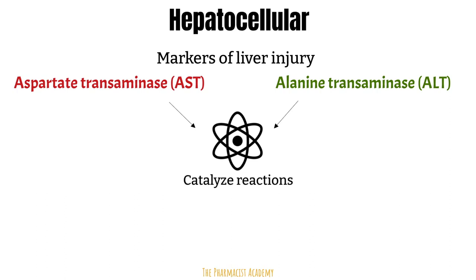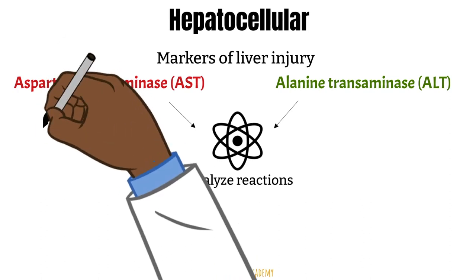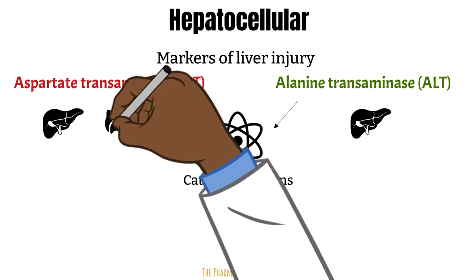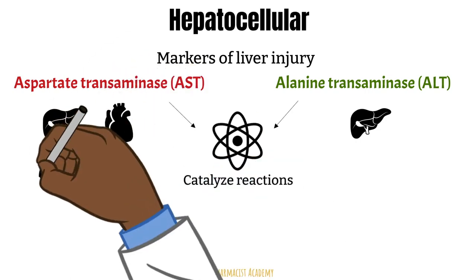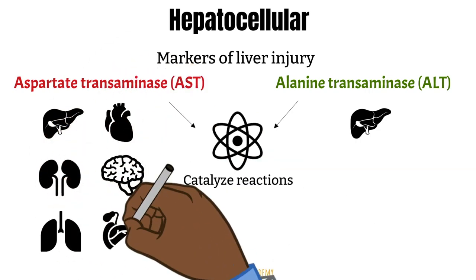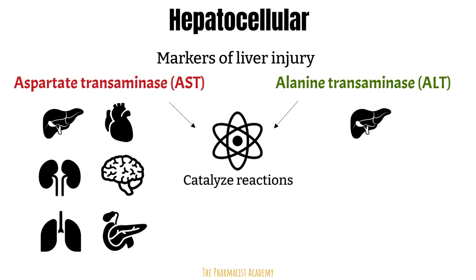Although both the AST and the ALT are found in the liver, the AST is also found in other places, such as the heart muscles, the kidney, brain, lungs, pancreas, and others. Because of this, elevations in the AST may be seen as secondary to non-hepatic causes as well.